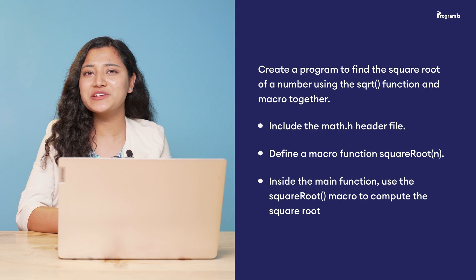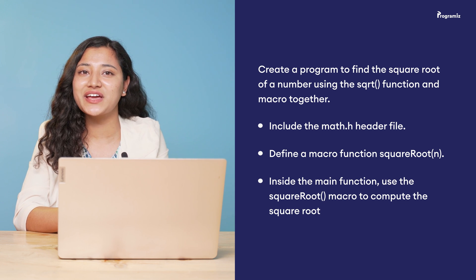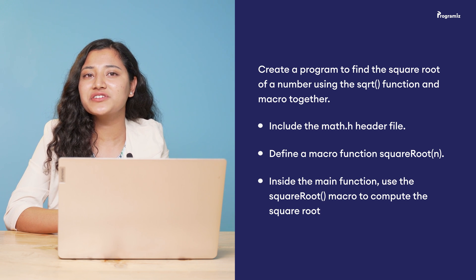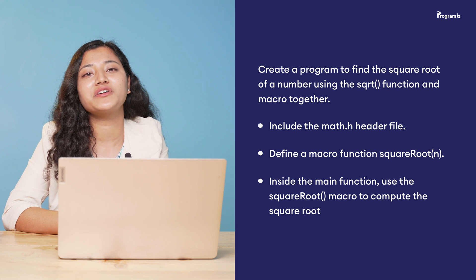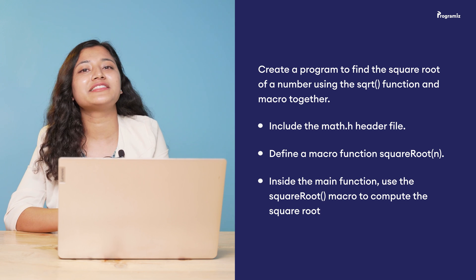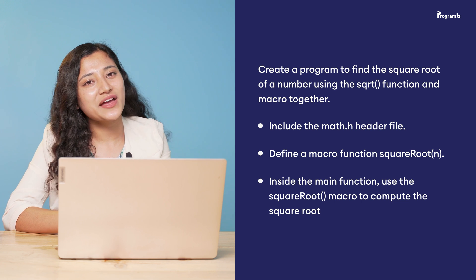To revise what you've learned, here is a programming task: create a program to find the square root of a number using the sqrt function and a macro together. Include math.h, define a macro function SQUARE_ROOT(n) that uses sqrt to find the square root of n, and inside main use the SQUARE_ROOT macro to compute the result. You'll find the answer in our GitHub repository — the link is in the video description.